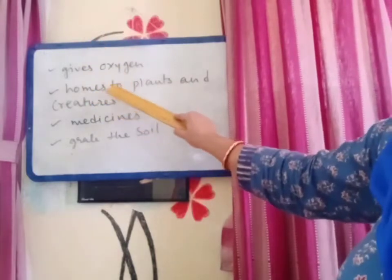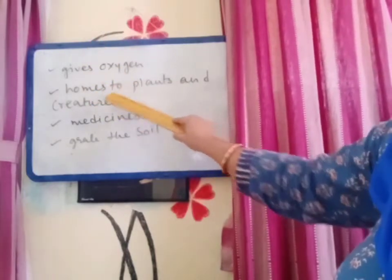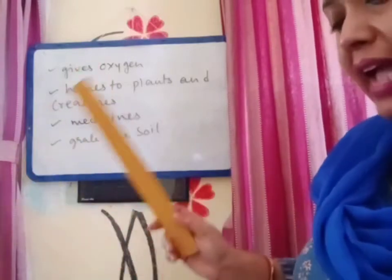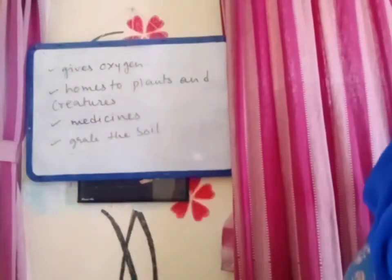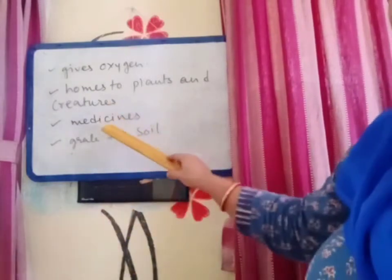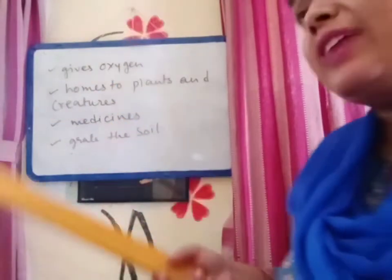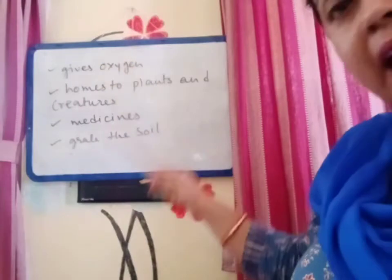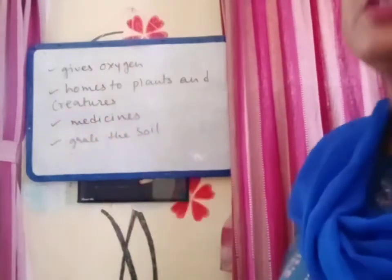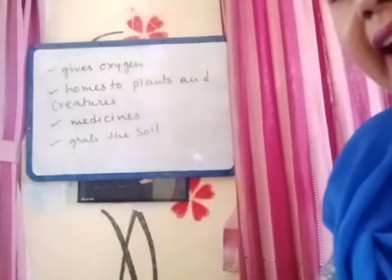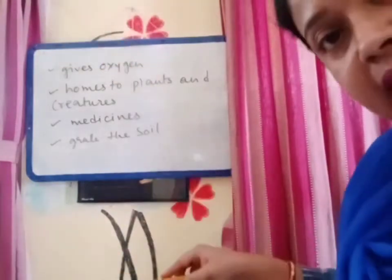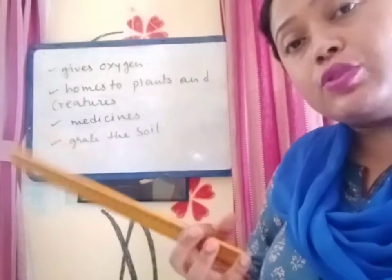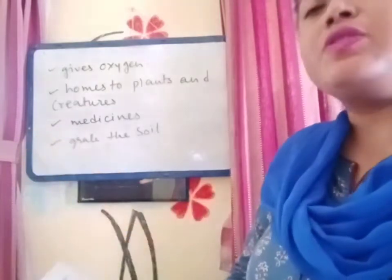Number 2: the natural surroundings of the forest are home to many plants and many creatures. Medicines — some kinds of plants have medicinal values, and with the help of those plants we get medicines. Last, that is grab the soil. What does it mean? Especially in hilly areas, when trees are there, those trees can grab the soil with the help of their roots.